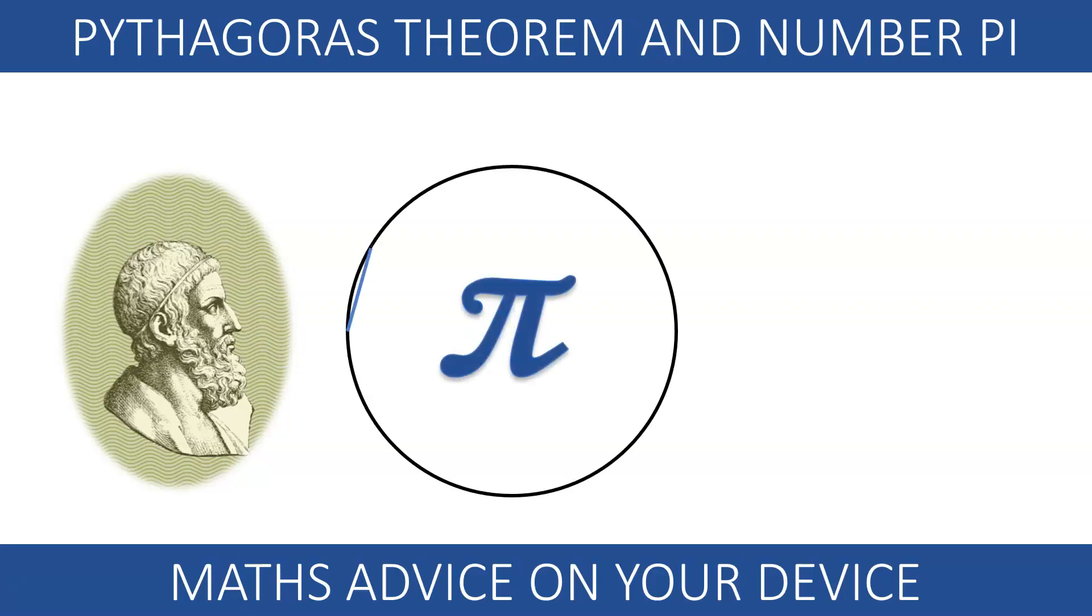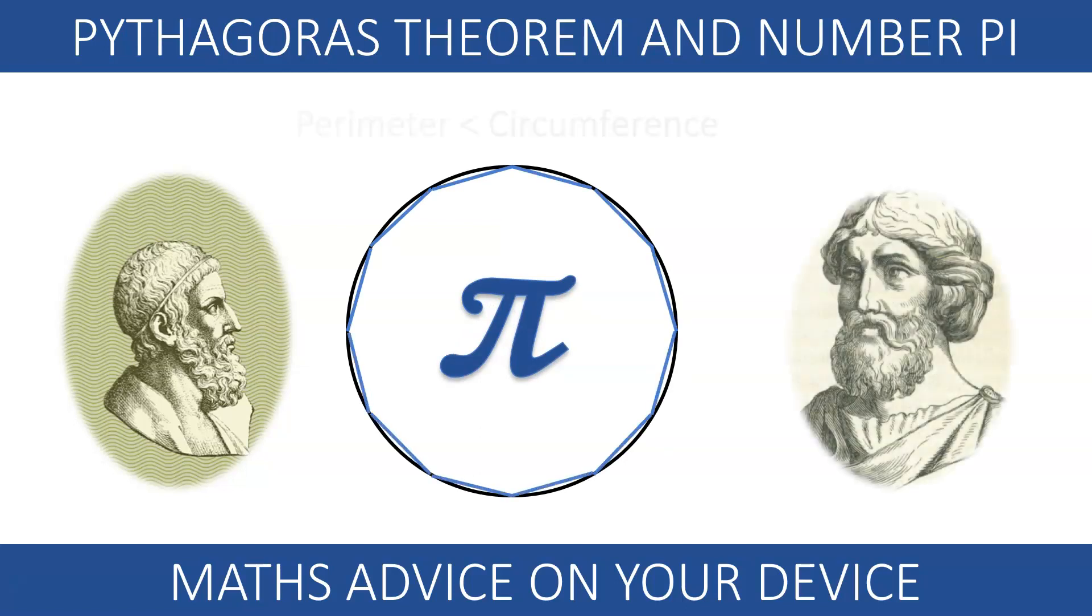In this video we are using Archimedes' method to find an approximation for the number pi. He did that by simply using Pythagoras' theory to approximate the circumference of a circle using the perimeter of a polygon.